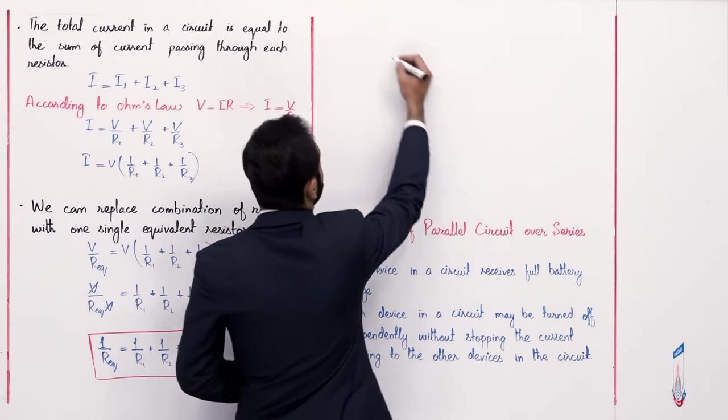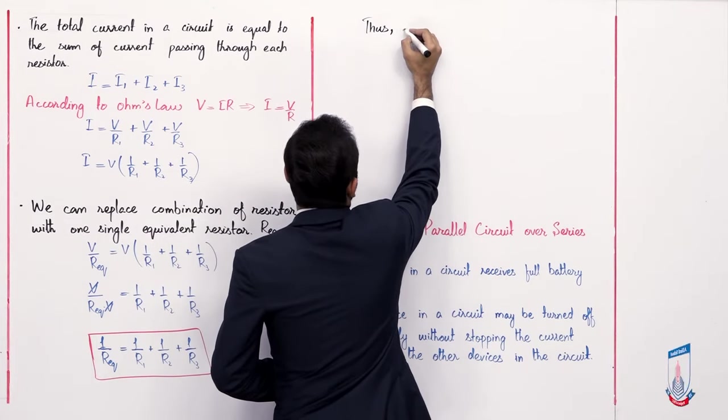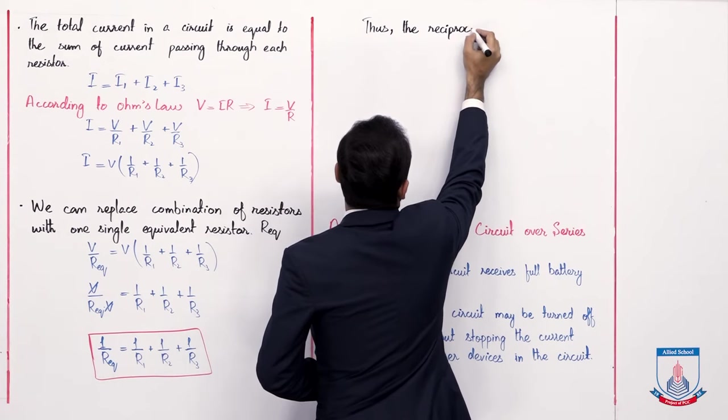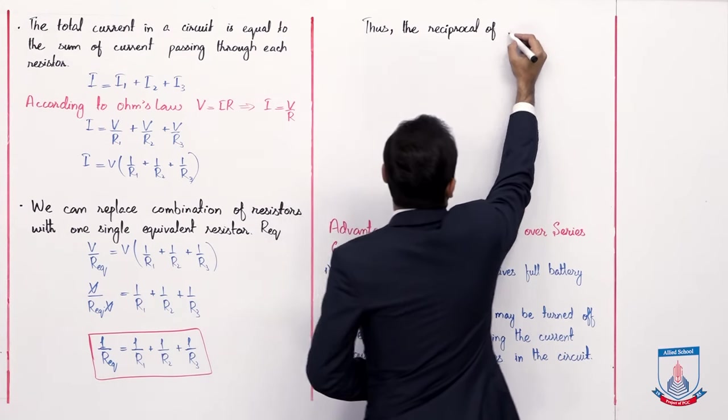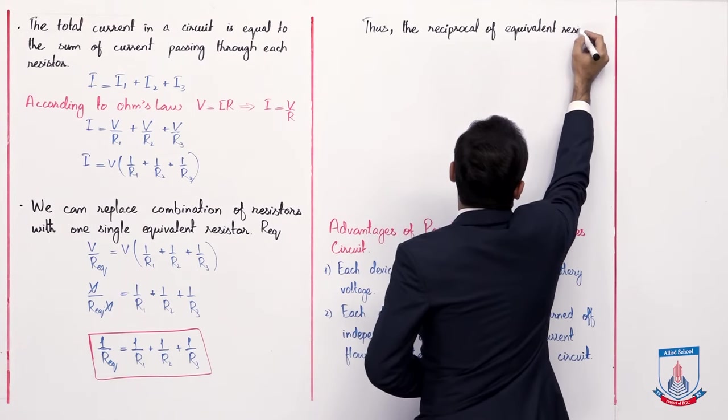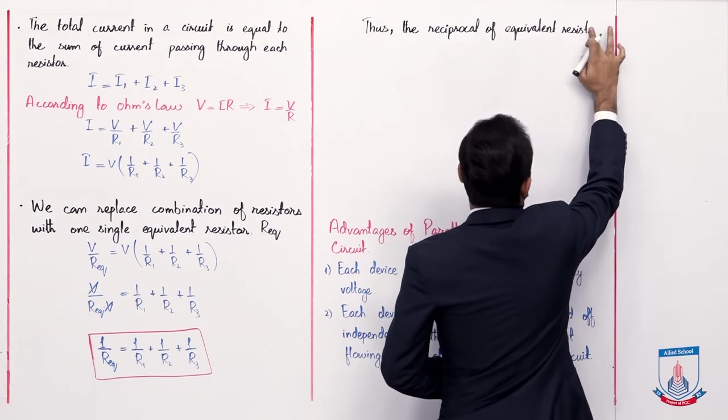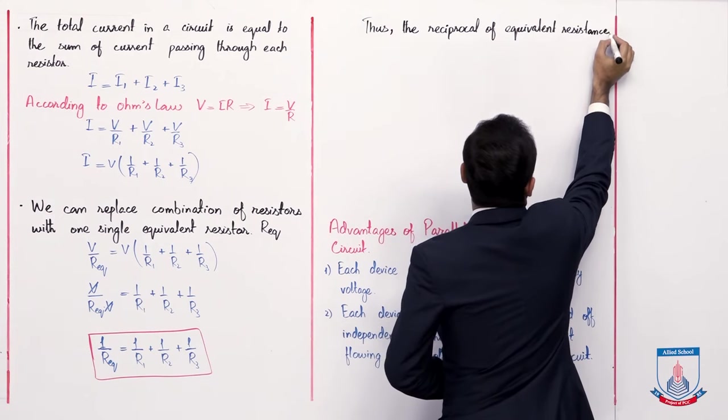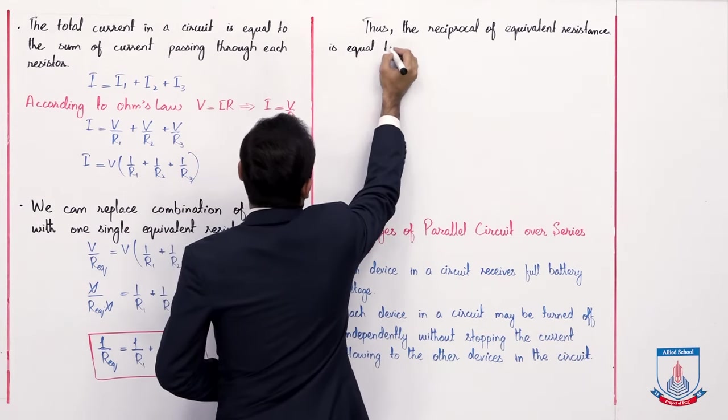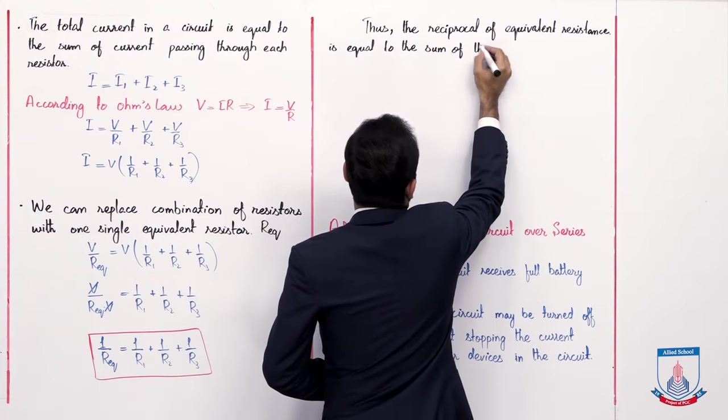Thus, the reciprocal of equivalent resistance is equal to the sum of the reciprocals of individual resistances. Clear?